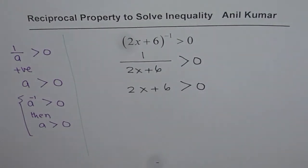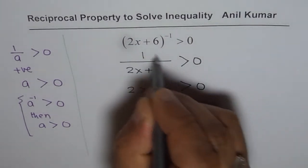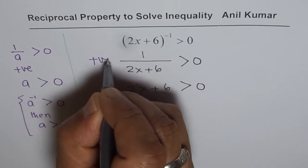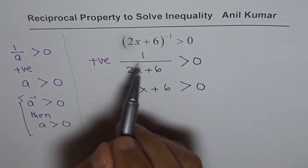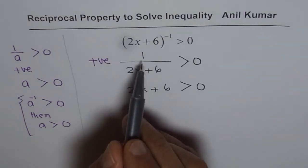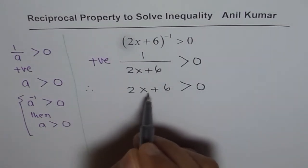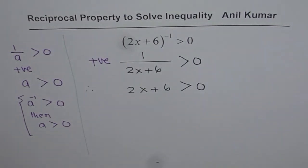What we are trying to say here is greater than 0 means we are looking for this term to be positive. That means the denominator should also be positive, otherwise it cannot be greater than 0, and therefore 2x plus 6 should also be greater than 0.